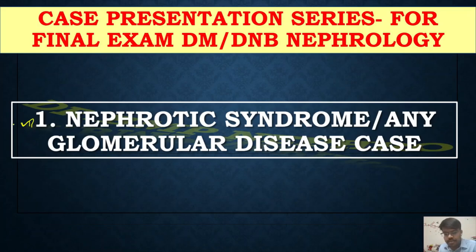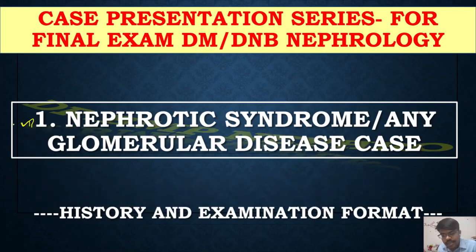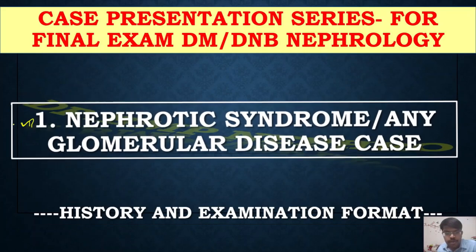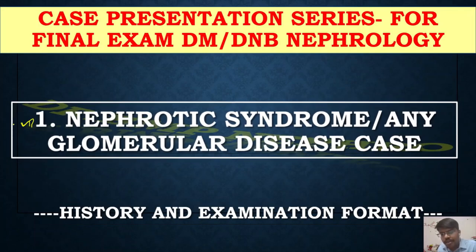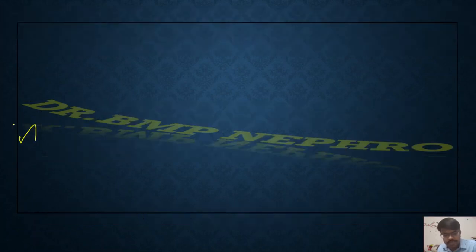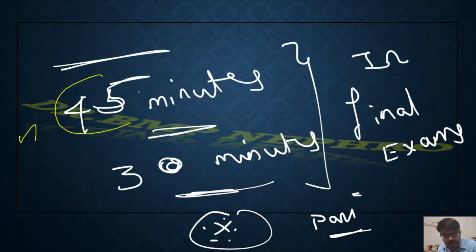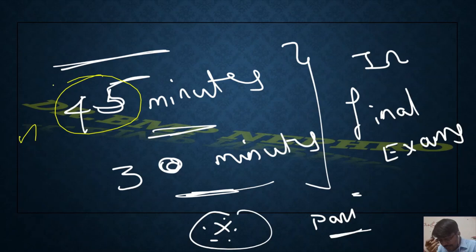In the final exams of DM or DNB nephrology, the case presentation forms an important component. The history and examination format is very important because questions will be formulated based on that. We will see the examination format for glomerular disease, which can be nephrotic syndrome, nephritic syndrome, RPGN, or AKI. In the final exam, candidates get only 45 minutes for the long case, so we have to complete both history and clinical examination within that time.